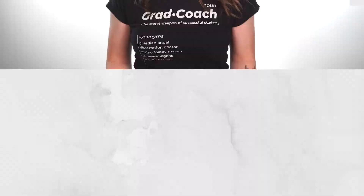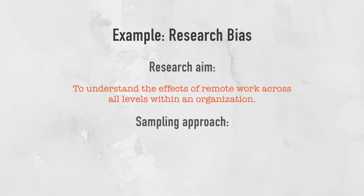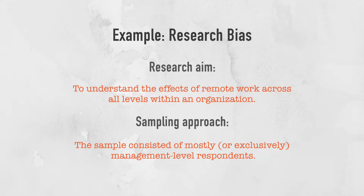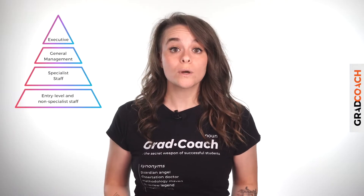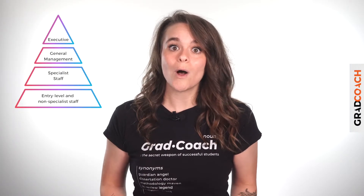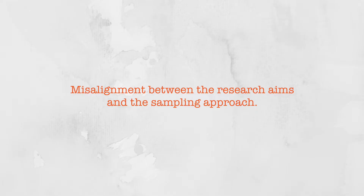For example, if you plan to research the effects of remote working arrangements across all levels of an organization, but your sample consisted mostly of management-level respondents, you would run into a form of research bias. Excluding input from lower-level staff means the results would be biased in favor of a certain perspective — that of management. If your research aims were only interested in managers' perspectives, this would not be a problem, but here there is a misalignment between the research aims and the sample.